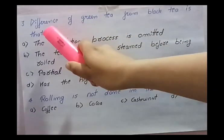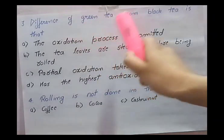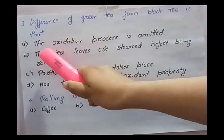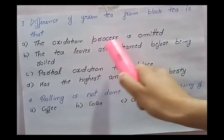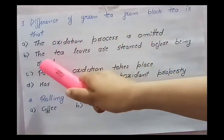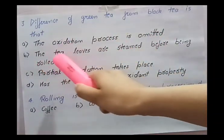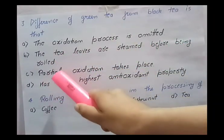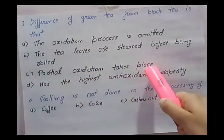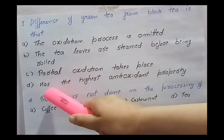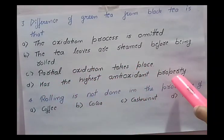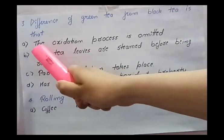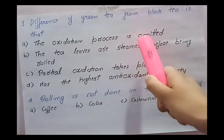Third question: the difference of green tea from black tea is that — and the options given are: first, the oxidation process is omitted; second, the tea leaves are steamed before being rolled; third, partial oxidation takes place; and last, it has the highest antioxidant property. In green tea, the oxidation process is omitted — yes, during the processing of green tea the oxidation process is not done.